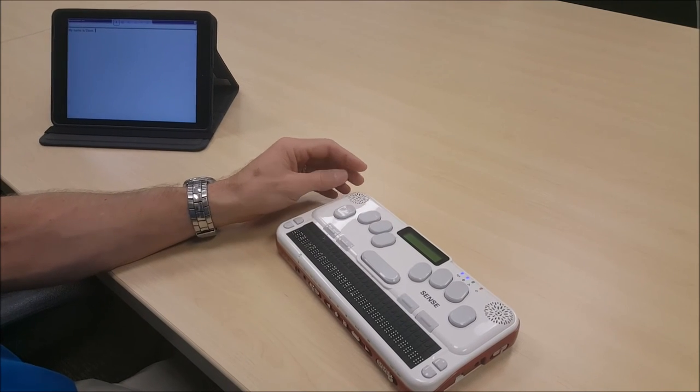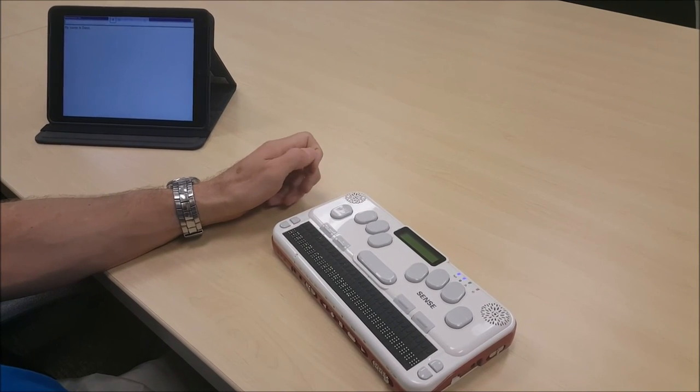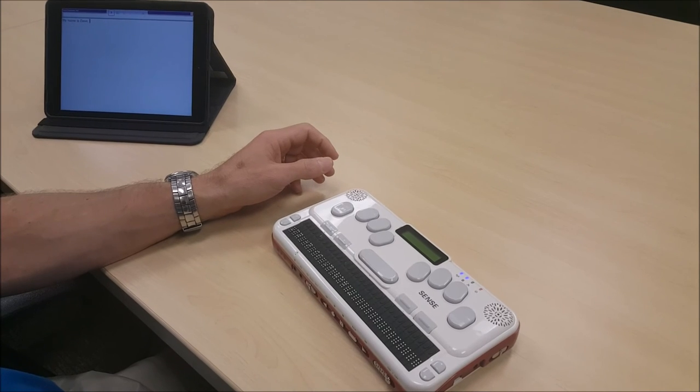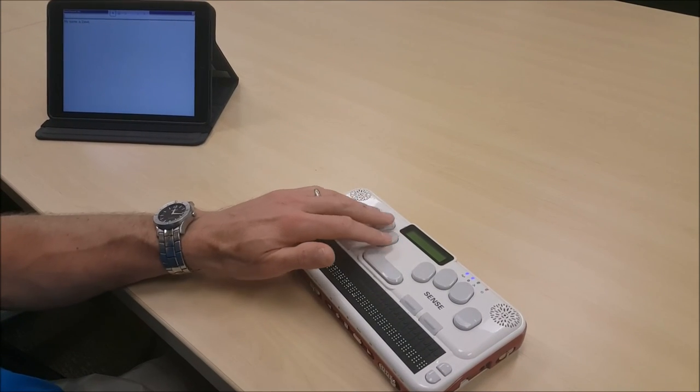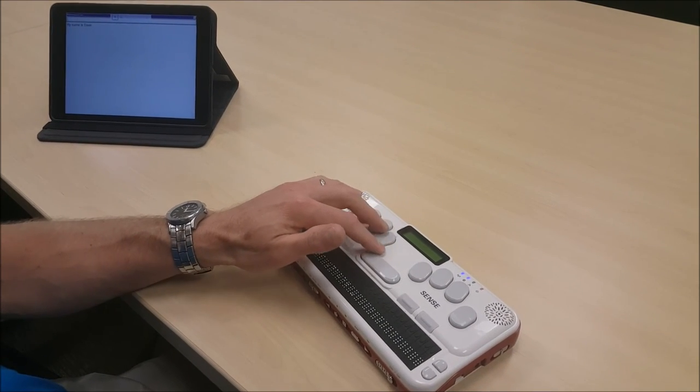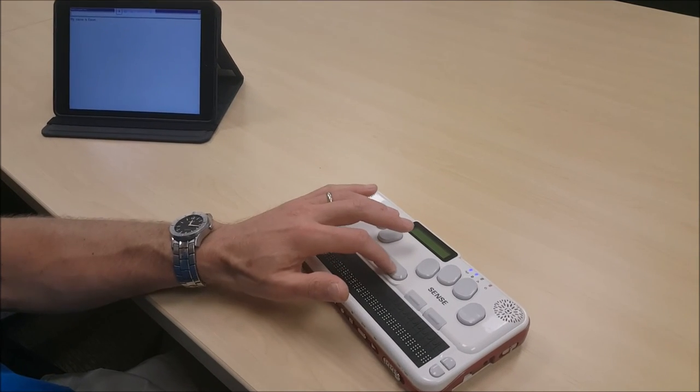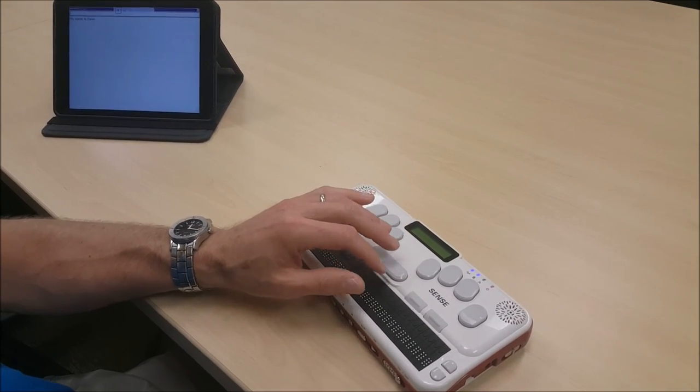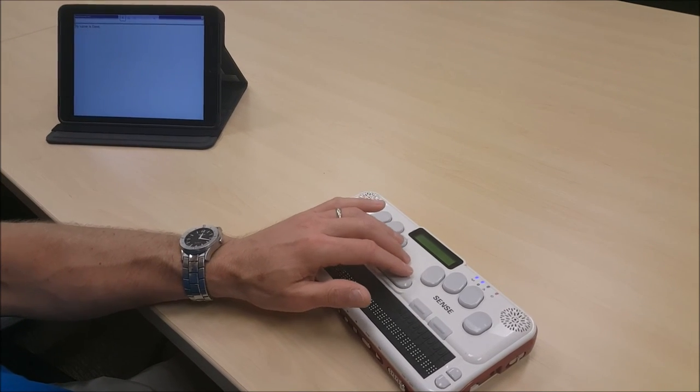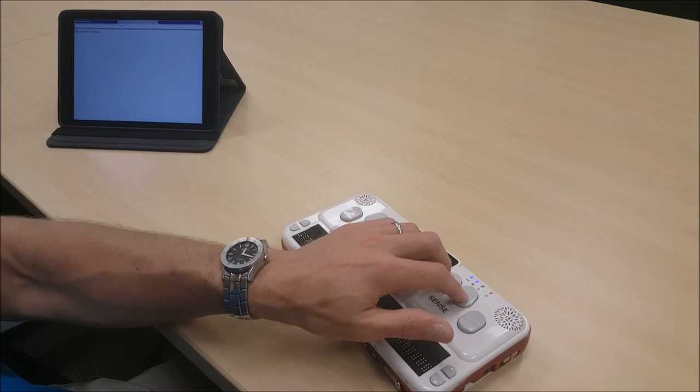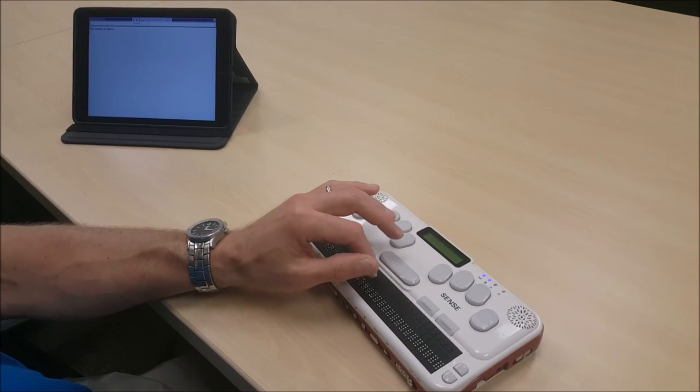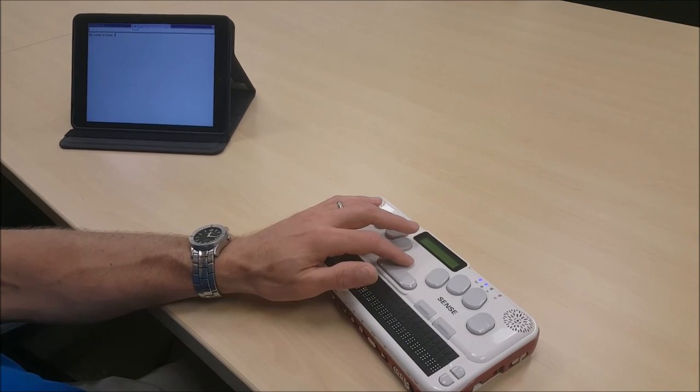I can use typical navigation commands for moving around my document. For example, if I want to go to the top of the document, which is dots 1, 2, 3 in the space bar, I can press space, dots 1, 2, and 3 in the space bar. Top of document. To go to the end of the document, I would press space, dots 4, 5, 6, and space.